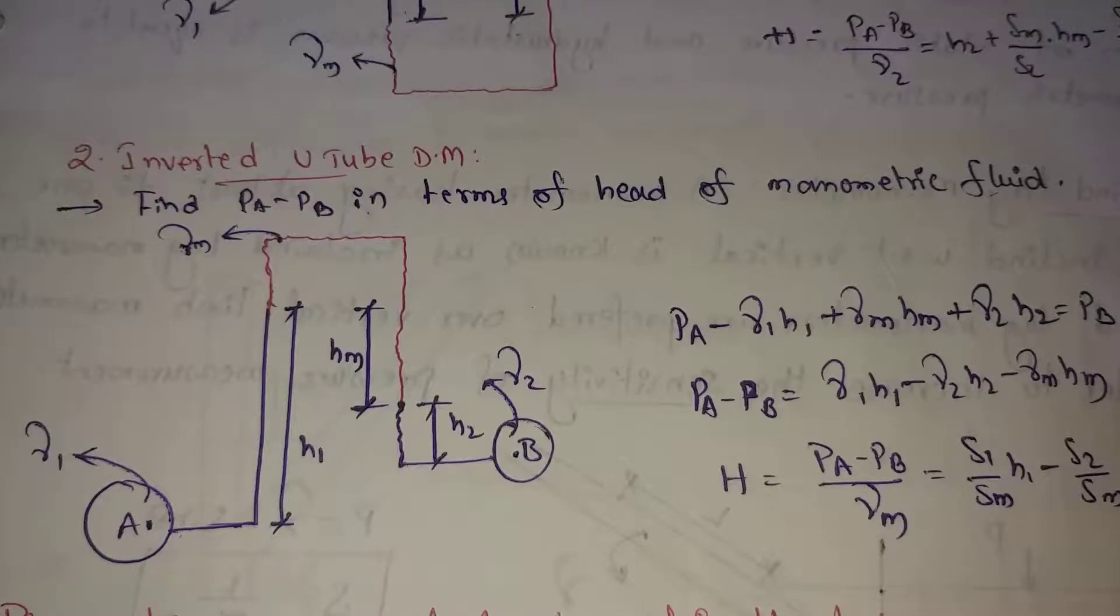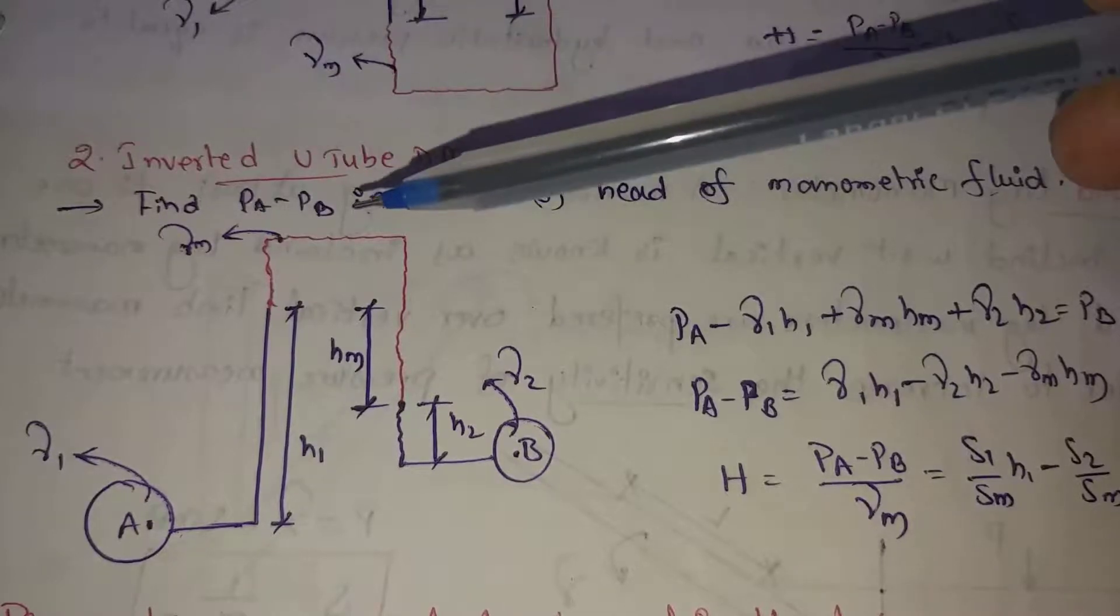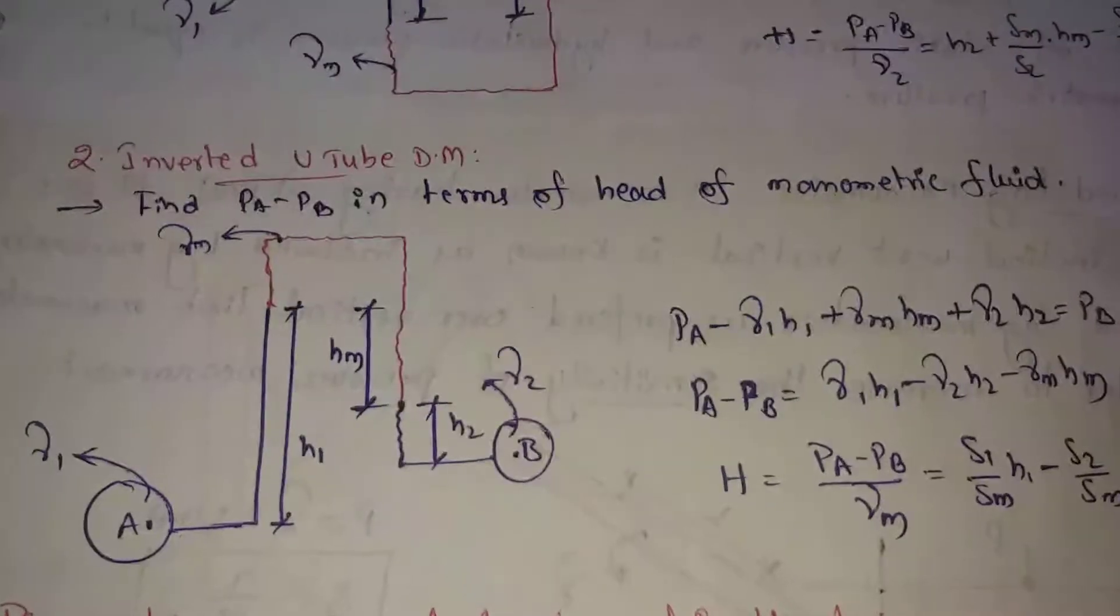So this inverted U-tube manometers will be higher than the U-tube manometers. So this is PA minus PB. This is the pressure difference. Here, the pressure difference in U-tube differential manometers and inverted U-tube differential manometers, the two pressure differences will be found out. But low pressures will be better accuracy to find out. So that is the main purpose.